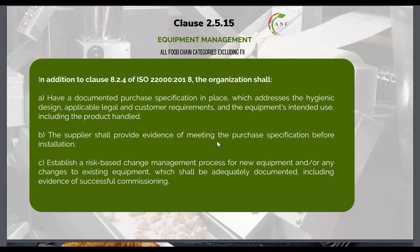Clause 2.5.15 — equipment management — is a new requirement also introduced in BRCGS issue 9. Many problems are being found here. First, a documented purchase specification must be in place — not a supplier-provided spec, but what your organization will check for when procuring new equipment. This purchase specification must address hygienic design, applicable legal and customer requirements, and the equipment's intended use. The supplier shall provide evidence of meeting the purchase specification before installation.